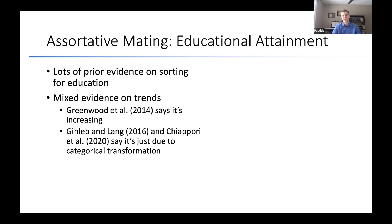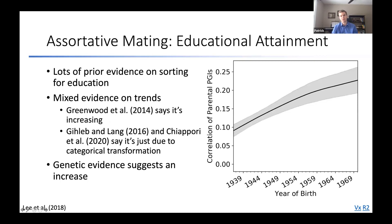A more controversial example is sorting on educational attainment. It's not controversial that people sort on education and SES-type outcomes, but there's a question about how that's been changing over time. A 2014 paper found people are sorting more strongly on education now than in the past; follow-up work said that was a statistical artifact and sorting has stayed the same. When we look at genetic sorting, we find evidence consistent with the first paper — sorting on predicted education is much higher for parents of children born in 1970 than those born in 1940, which may have implications for income inequality and intergenerational mobility.